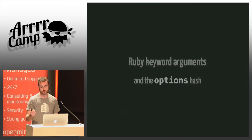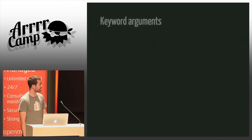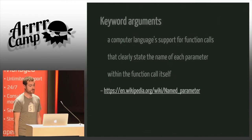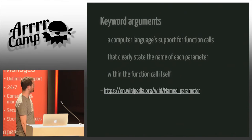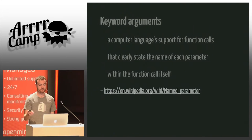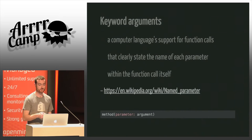You may already have a good idea of what keyword arguments are, but let's start with the definition. Wikipedia says they refer to a computer language support for function calls that clearly state the name of each parameter within the function call itself. Translated to Ruby: when we call a method, we name each parameter as we pass it an argument.